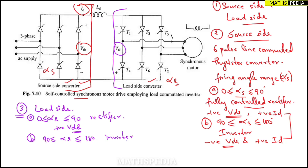Whenever alpha-l is between 90 to 180 degrees, the load side converter will act as an inverter and will give negative Vdl and positive id. So the load side converter follows the same procedure as the source side converter.